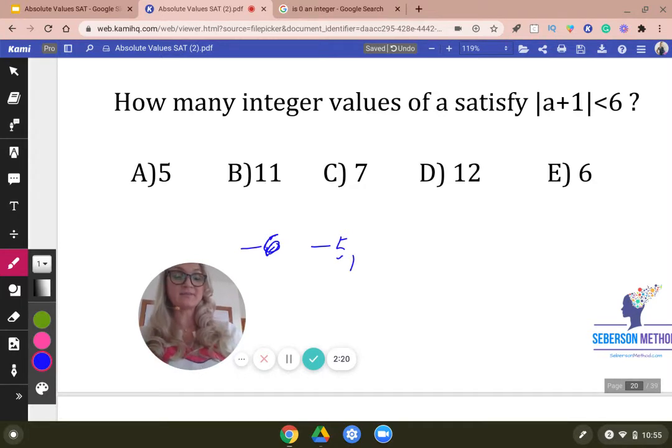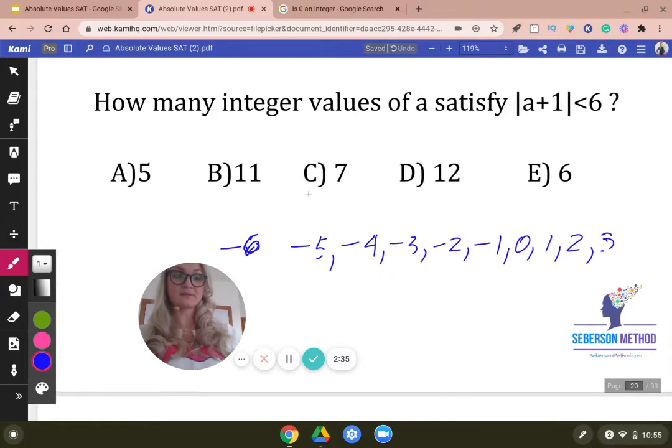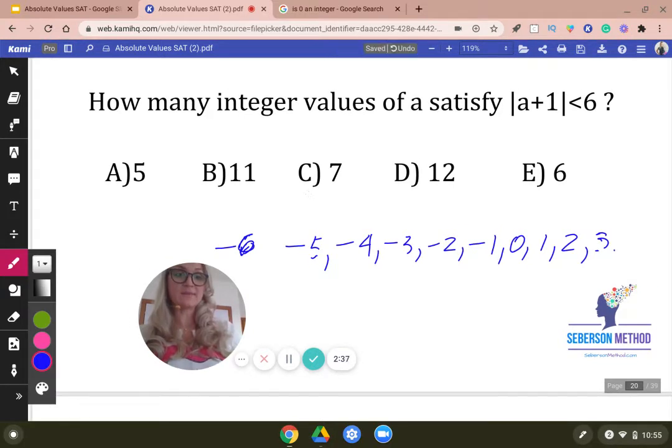So we have negative six, negative five, negative four, even negative three, negative two, negative one, zero, one, two, three. We need you to be, I need you to be careful with the ending. Four. Can five be it? Nope. That's it.